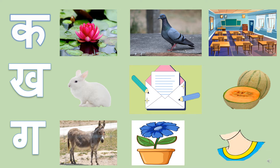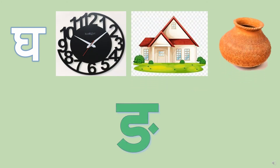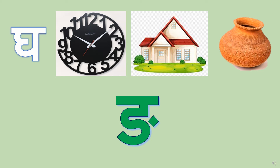G say gadha. Gadha means donkey. G say gamla. Gamla means pot. G say garden. G say gadhi. Gadhi means clock. G say ghar, which means house.